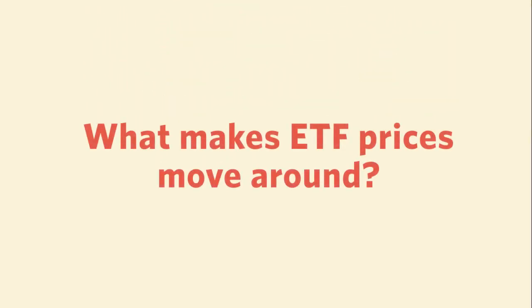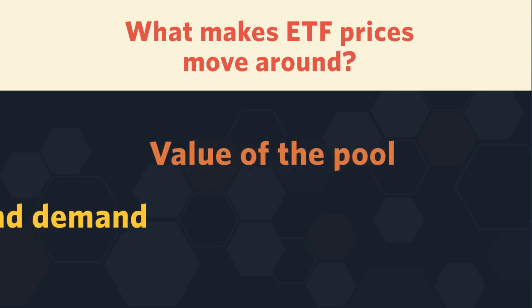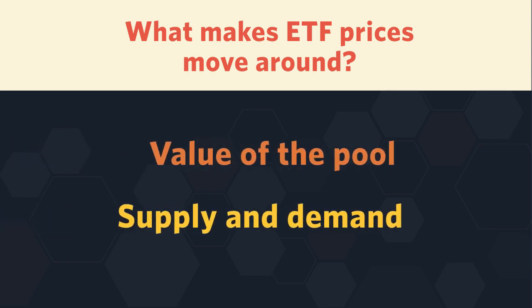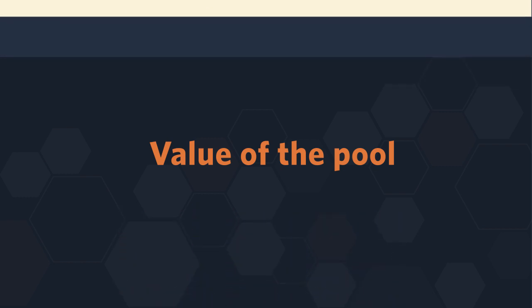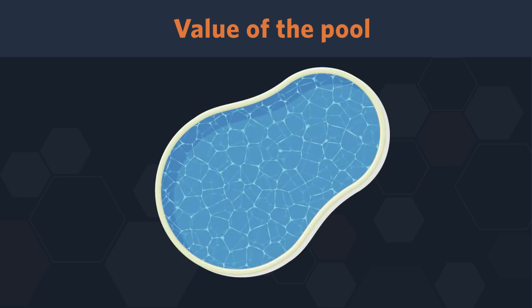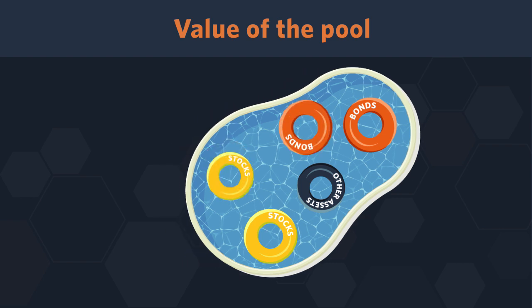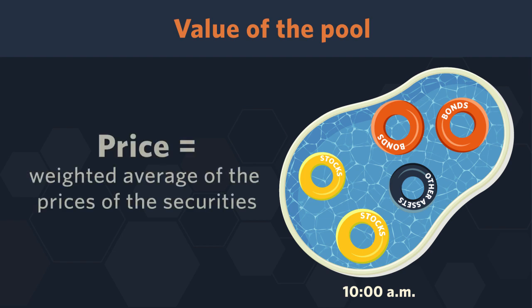What makes ETF prices move around on the exchange? Two things: first, the value of the pool, and second, the supply and demand of the ETF itself. ETFs are made up of a pool of stocks, bonds, or other assets that are also trading during the day, so the price of an ETF at, say, 10 a.m. should be the weighted average of the prices of the securities in that ETF's pool at 10 a.m.